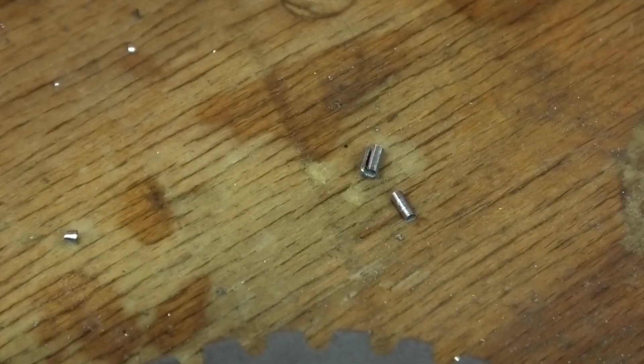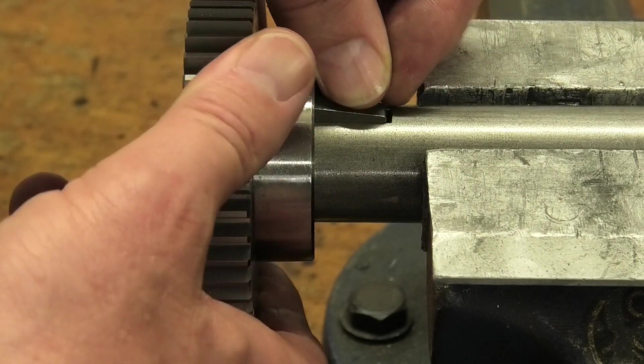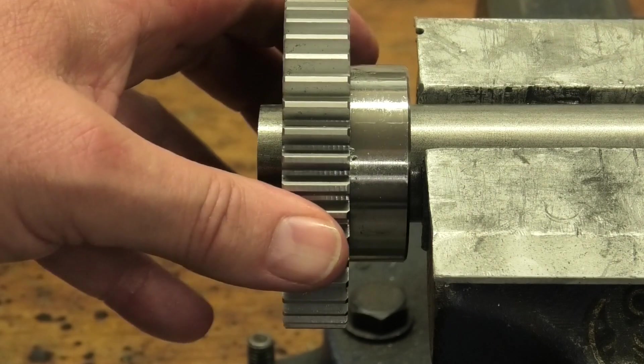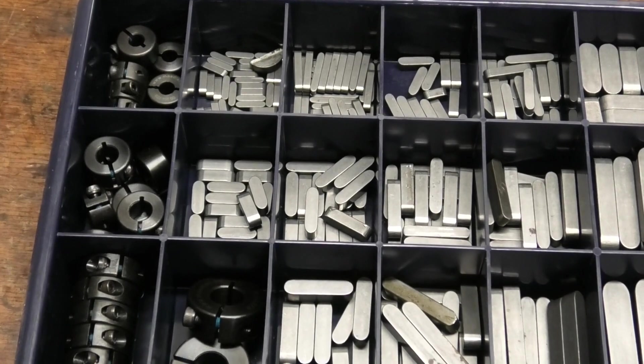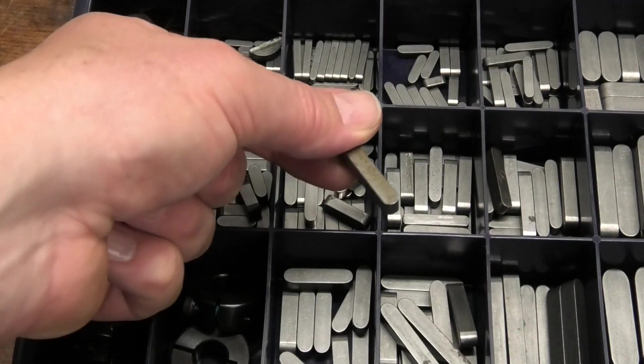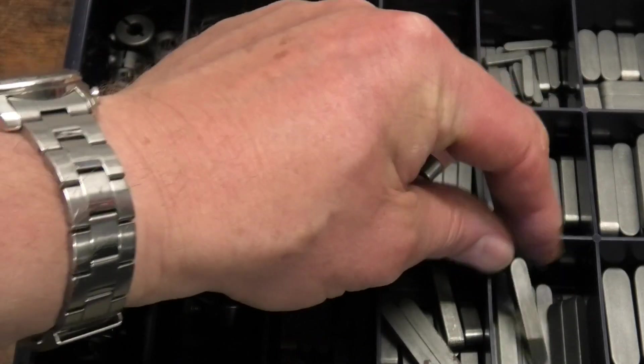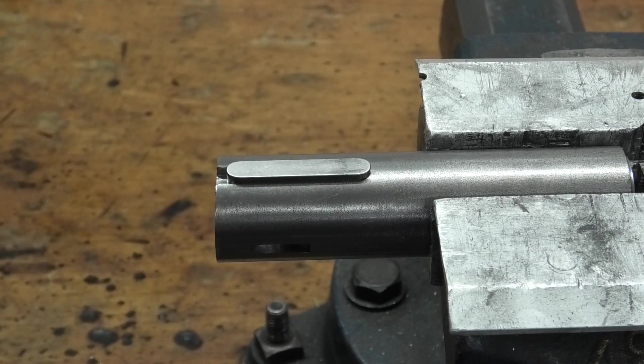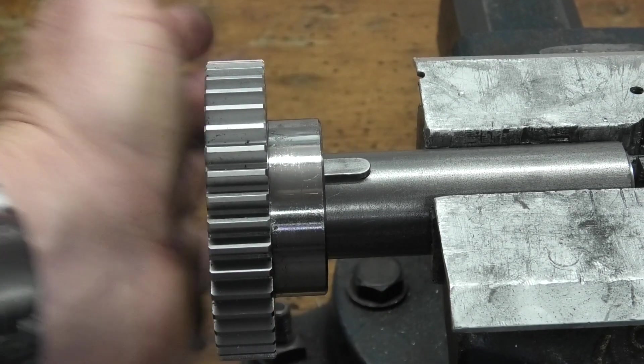Test with the Woodruff key. Has a bit too much play, obviously the cutter is a little too wide. Test with a 6mm feather key. First the groove made with the end mill.